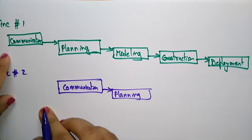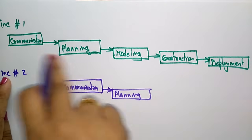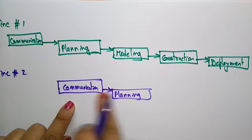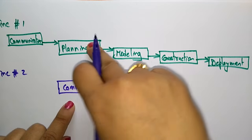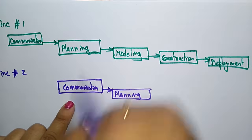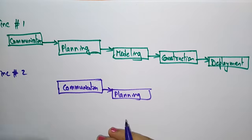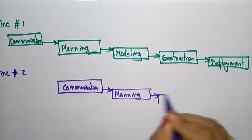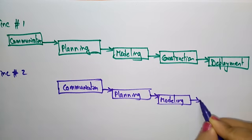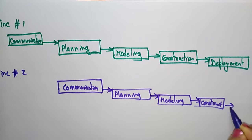If the same customer is involved, once they finish one module they hand it over and then communicate about the next module. So one team is in the planning stage while another is progressing further. It is an incremental model — one after another — so planning, then modeling, then construction, then deploy.